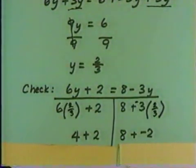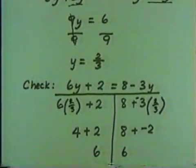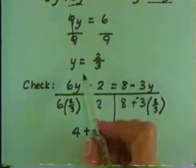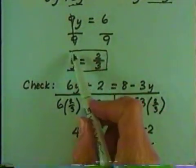On the left-hand side, 4 + 2 is 6. On the right-hand side, 8 + (-2) is 6. These match. That means we have a check. And our solution is, indeed, y = 2/3.